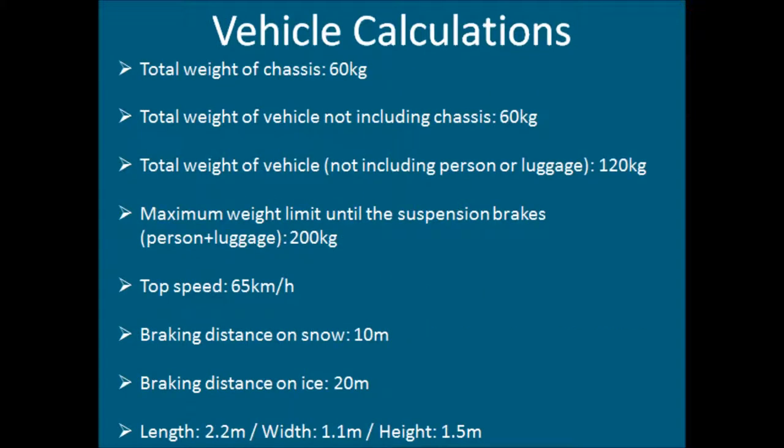The total weight of the chassis is 60 kg. The total weight of the vehicle not including the chassis is 60 kg. The total weight of the vehicle not including the person or luggage is 120 kg. The maximum weight limit until suspension breaks, person and luggage, is 200 kg. That means that the vehicle can hold 80 kg more than its own weight in people and luggage. The top speed of the vehicle is 65 km an hour. The braking distance on snow is 10 meters and the braking distance on ice is 20 meters.